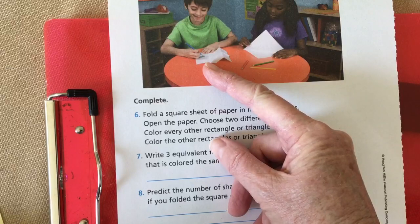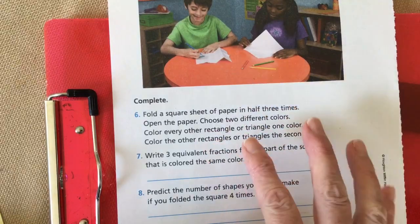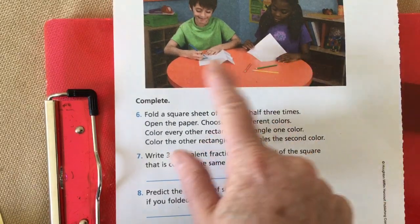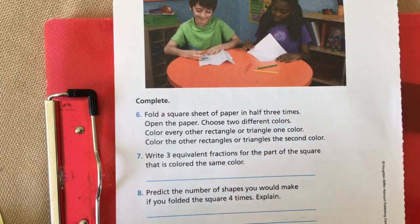How we fold it in hot dog and hamburger—we call that landscape and portrait, right? So there are different ways you can do that.